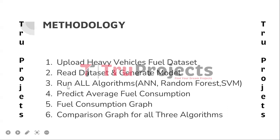The third module is Run All Algorithms — ANN, Random Forest, and SVM. This module implements the ANN, Random Forest, and Support Vector Machine algorithms. It runs all three algorithms simultaneously to predict the average fuel consumption, creating objects for each algorithm and feeding the training and testing data into them to generate models and predictions.